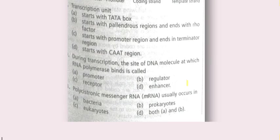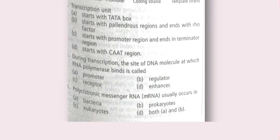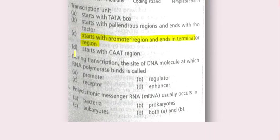Next question: a transcription unit starts with a TATA box / starts with palindromic regions and ends with rho factor / starts with a promoter region and ends with a terminator region / starts with a CAAT region. The correct answer is: the transcription unit starts with the promoter region and ends with the terminator region. The TATA box is a sequence present in the promoter that is rich in AT.